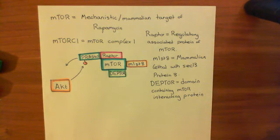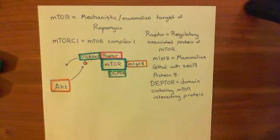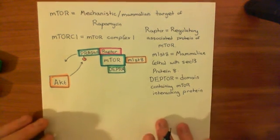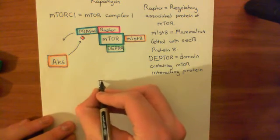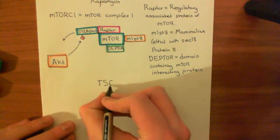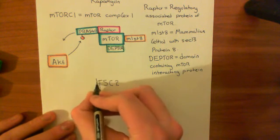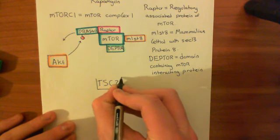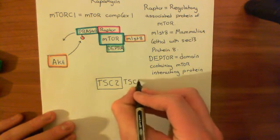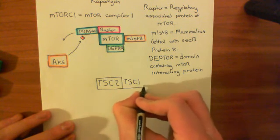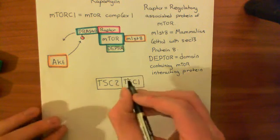Another thing that AKT does is it inactivates something known as the tuberous sclerosis complex 2 protein. The tuberous sclerosis complex is a complex of two proteins: TSC2, which stands for tuberous sclerosis complex 2 protein, and TSC1, which stands for tuberous sclerosis complex 1 protein.